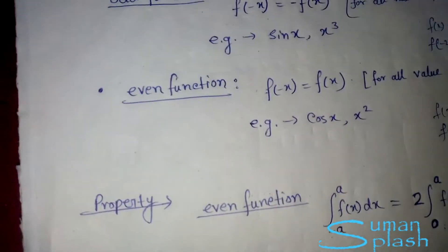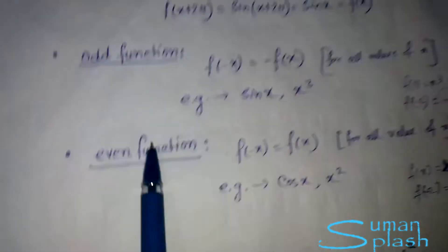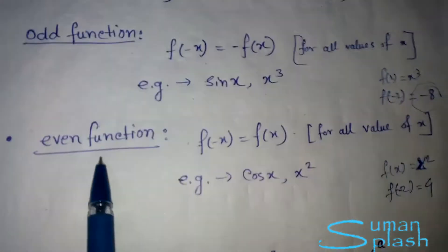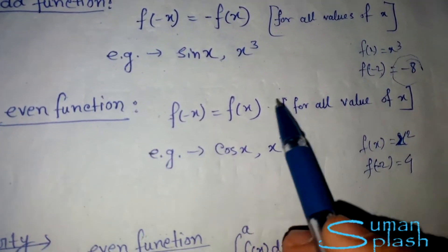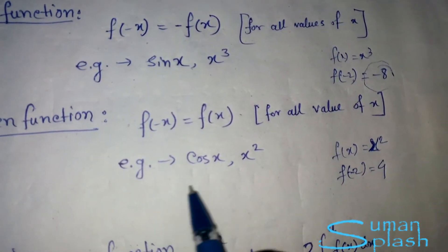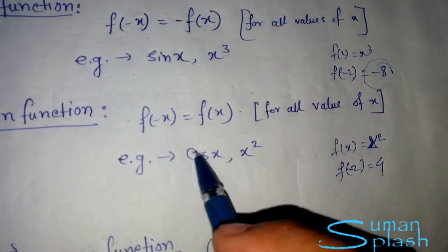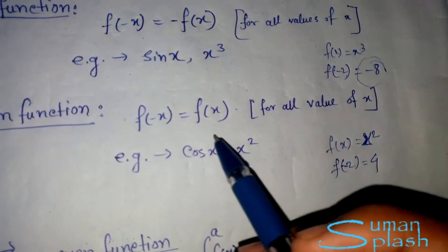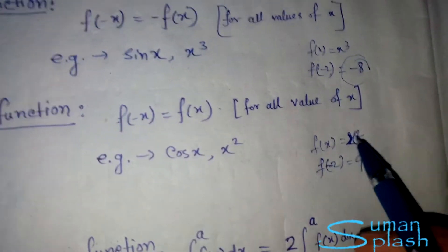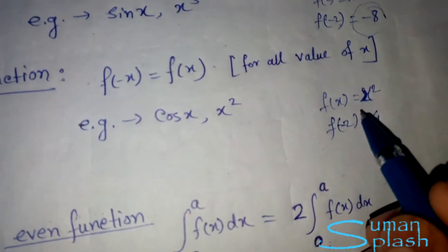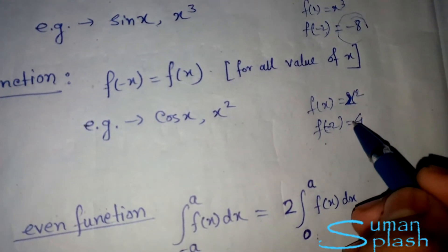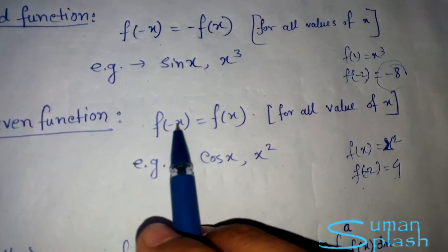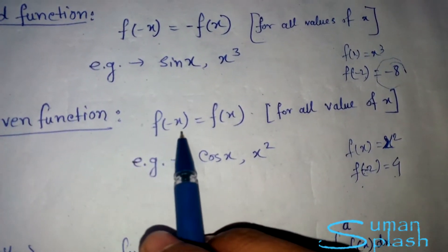For an even function, f(−x) = f(x) for all values of x. cos(x) and x² are examples of even functions. For instance, if f(x) = x², then f(−2) = (−2)² = 4, which is positive and equals f(2), so f(−x) = f(x), confirming it is even.